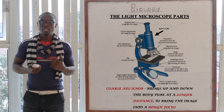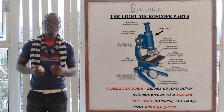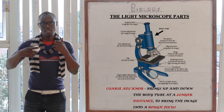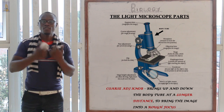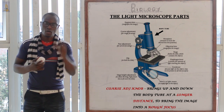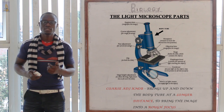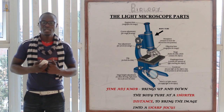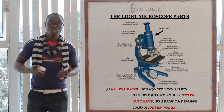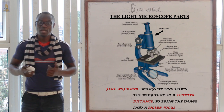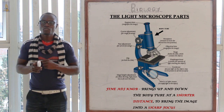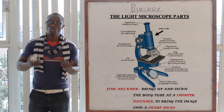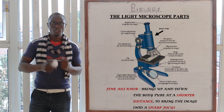The coarse adjustment knob moves the body tube up or down over a longer distance to bring the image into a rough focus. The fine adjustment knob slightly raises or lowers the body tube to bring the image into a sharp focus.